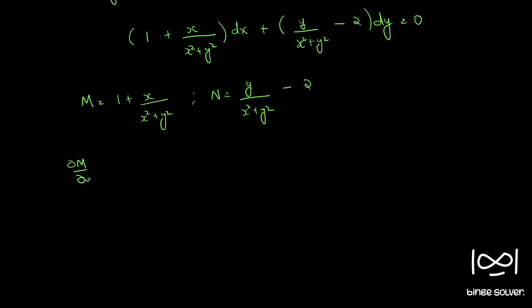∂m/∂y is, differential of 1 is 0, then we can apply u by v rule, which is this function. x square plus y square into differential of first, which is respect to y. So it becomes 0 minus x into differential of x square plus y square is 2y, by x square plus y square, the whole square. So this becomes minus 2xy by (x square plus y square) squared.